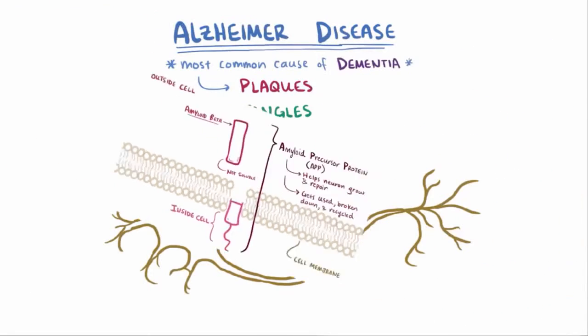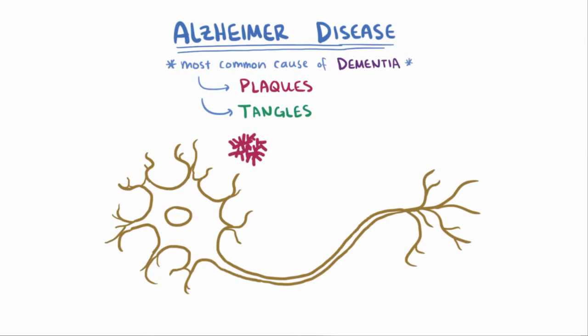These monomers tend to be chemically sticky and bond together just outside the neurons, and form what are called beta-amyloid plaques, these clumps of lots of these monomers.